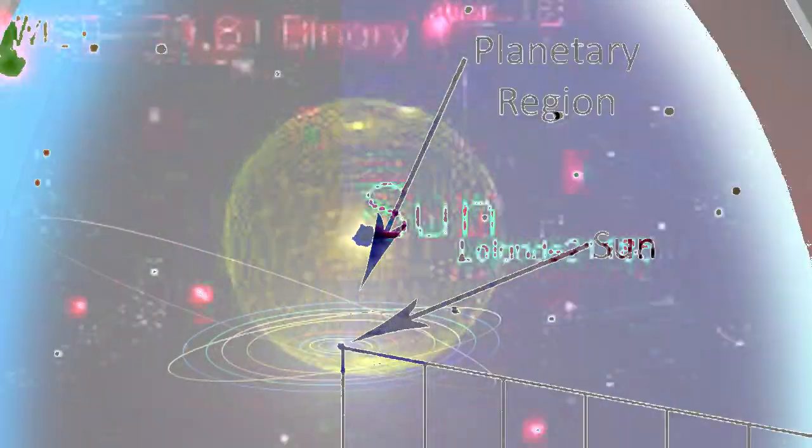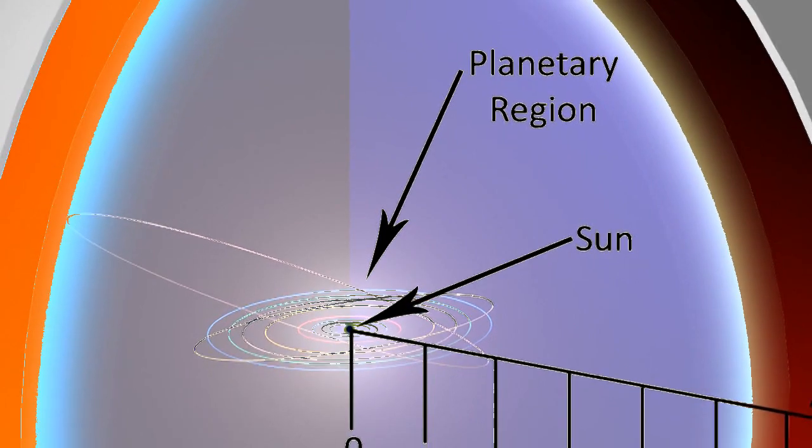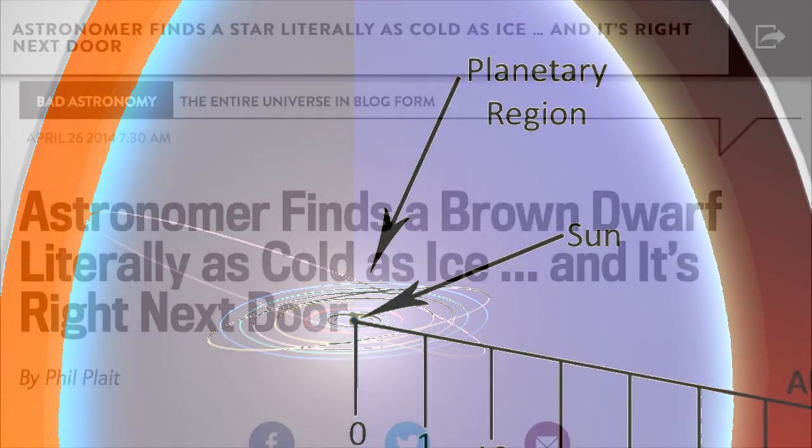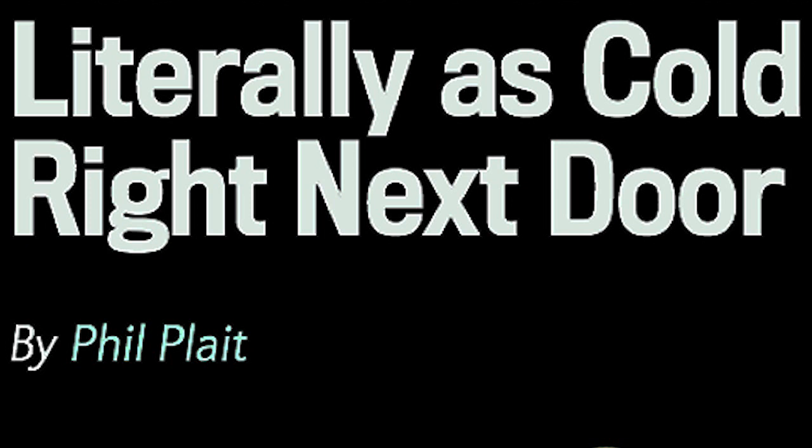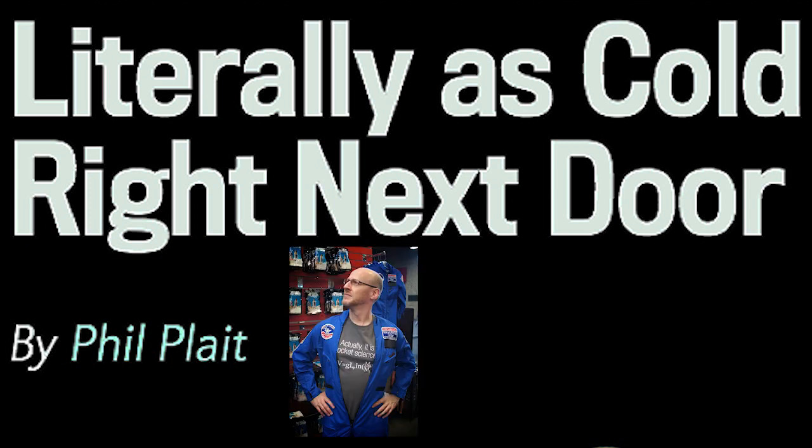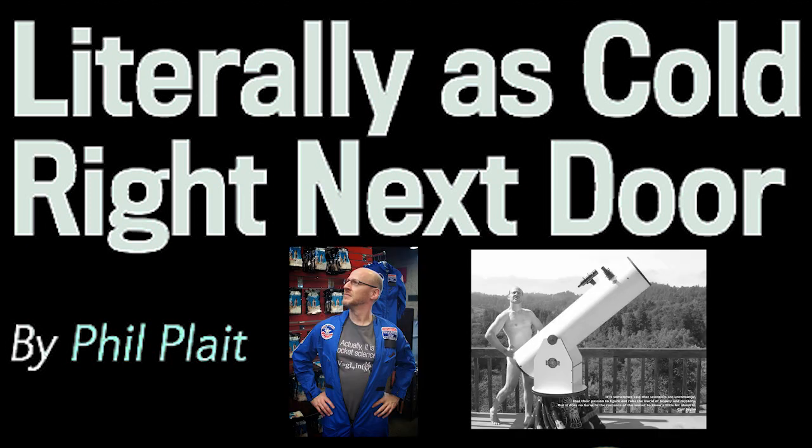Okay, we'll kick this thing off by reading from our great friend the Bad Astronomer Phil Plait over at Slate's Bad Astronomy. Now he starts out by saying: Astronomer finds a brown dwarf literally as cold as ice, and it's right next door.